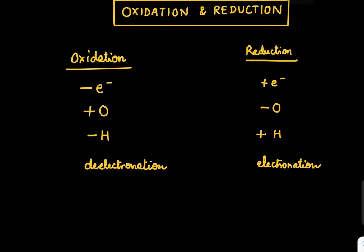For example, if Na becomes Na+, Na is getting oxidized. At the same moment, if Cl is becoming Cl-, it's a reduction for Cl. These are simple examples.